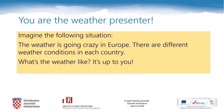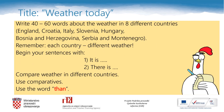It is your turn now. You are the weather presenter. Imagine the following situation: the weather is going crazy in Europe and there are different weather conditions in each country. This is your homework. The title is Weather Today. You should write 40 to 60 words about the weather in 8 different countries — in England, Croatia and our neighboring countries. Begin your sentences with 'It is' and 'There is.' You should compare weather in different countries using comparatives and the word 'than.'